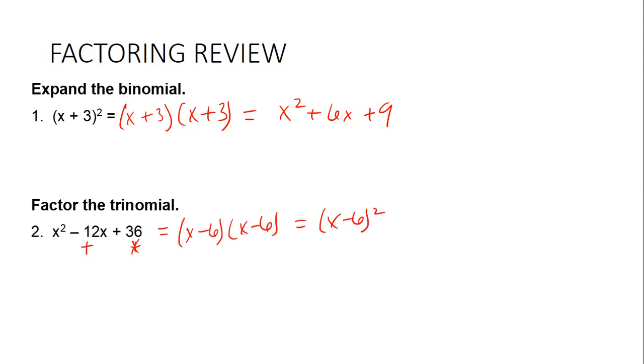Negative 6 and negative 6, which condenses down to being x minus 6 squared, right? Okay, these two examples here are what we called perfect square trinomials.